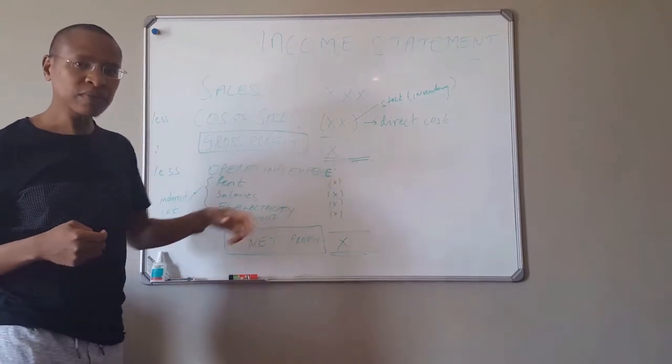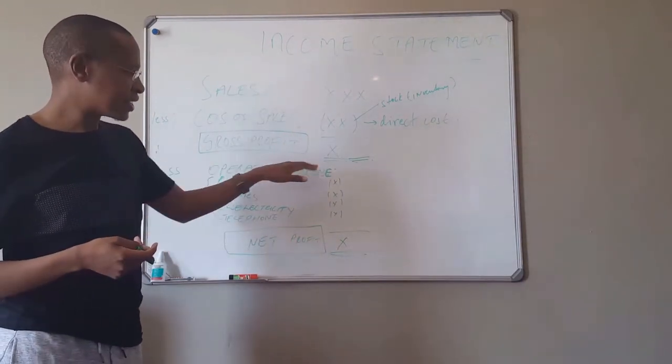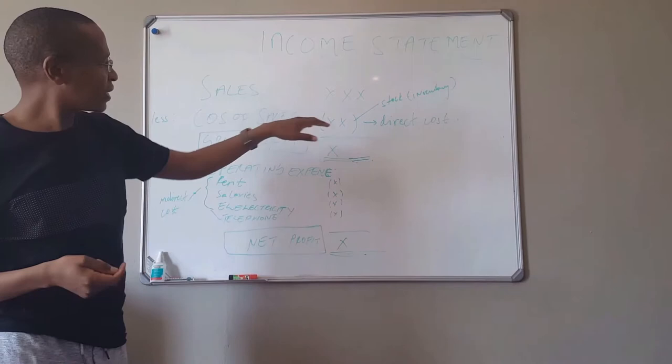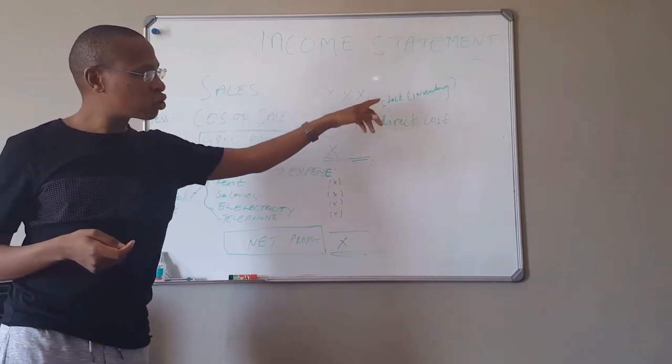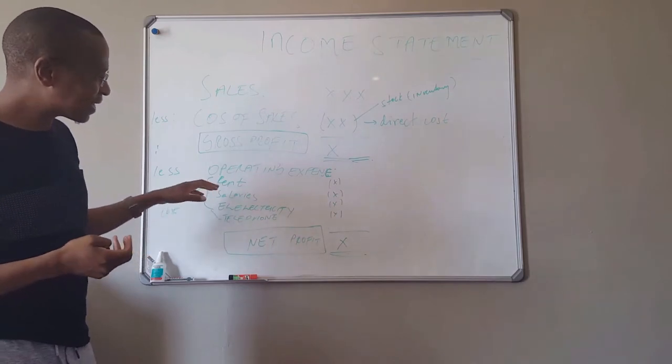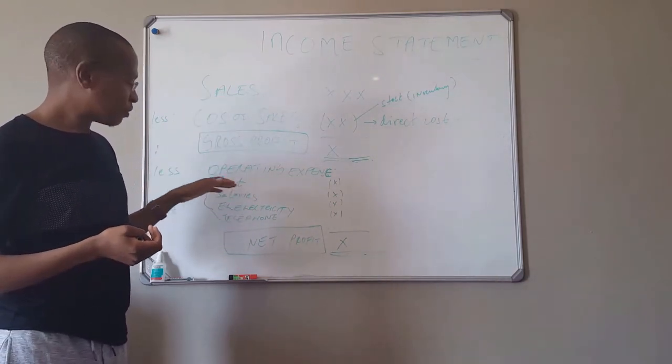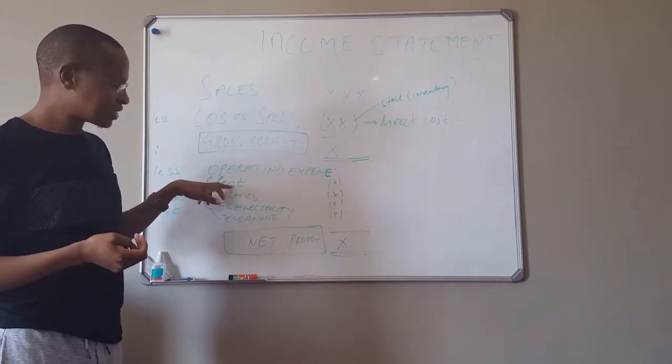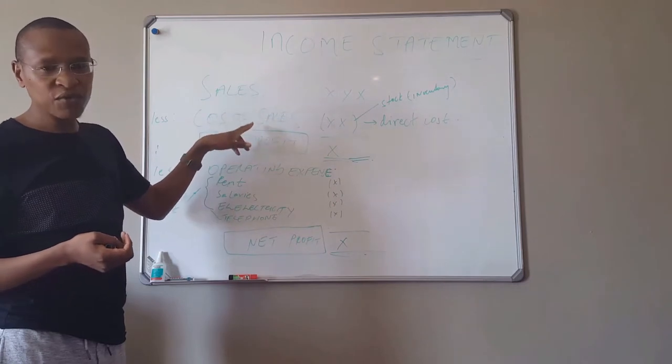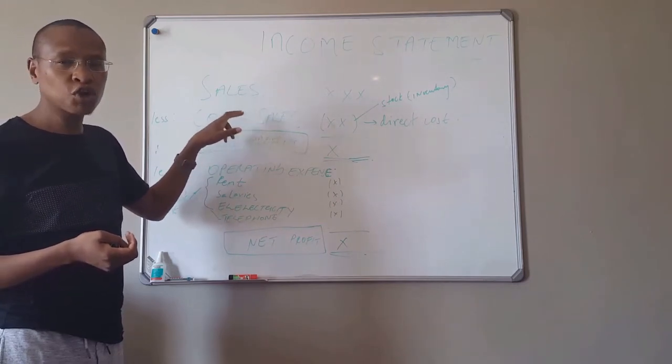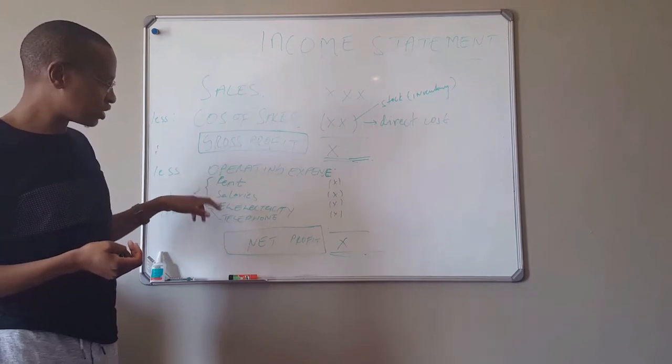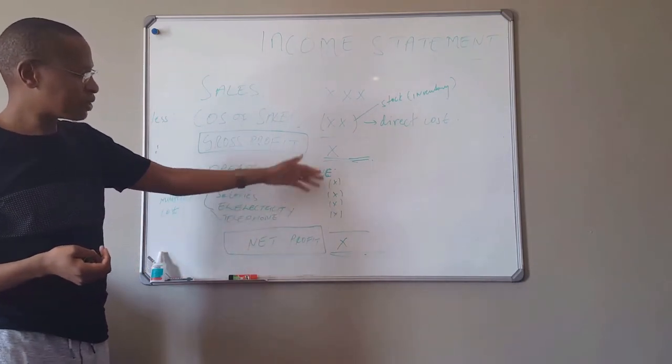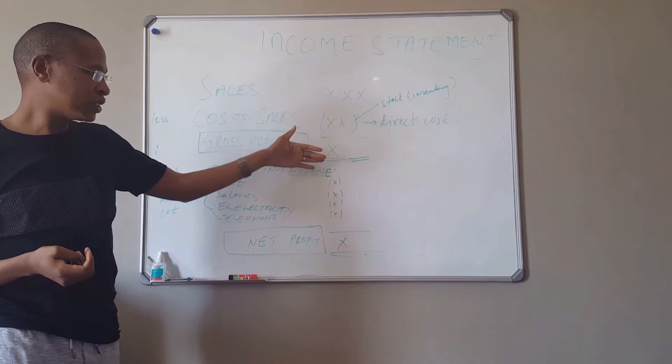Then we have what you call operating expenses. These are sometimes called indirect costs. They are not like cost of sales which is more of a direct cost. These could be your overheads - your rent, which you're going to pay irrespective of whether you have those stocks or not, your salaries, electricity, telephone. From the gross profit we deduct all these operating expenses and then you will find your net profit.